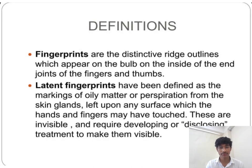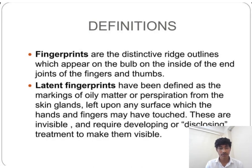Latent fingerprints have been defined as markings of oily matter or perspiration from the skin glands left upon any surface which the hands and fingers may have touched. These are invisible and require development treatment to make them visible.